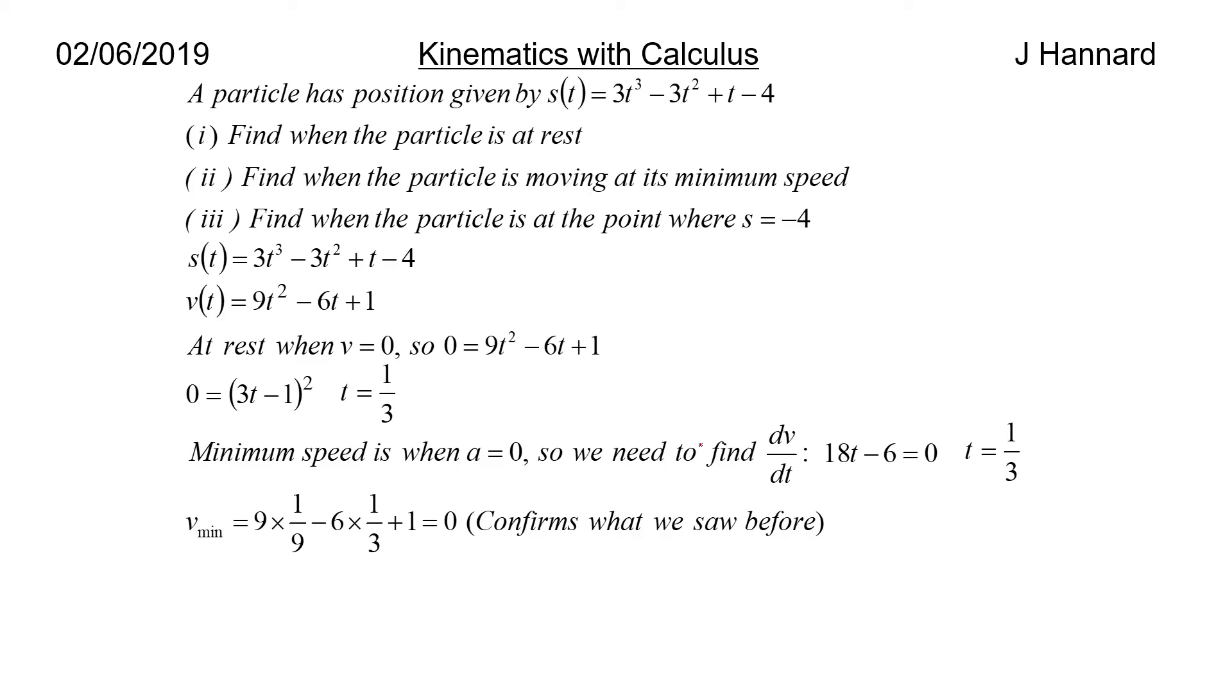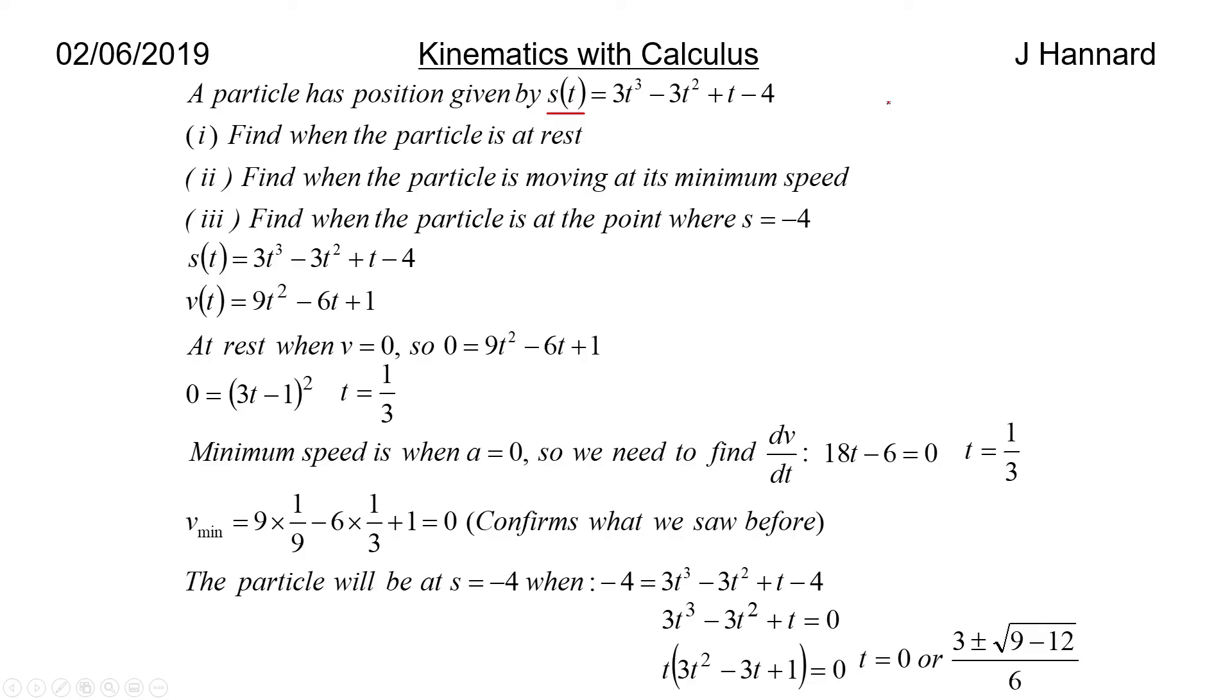Part 3 then. Find when the particle is at the point where s = -4. So we stick -4 at the start of the s(t) equation up here. So they're telling us what that is. So that's -4. And then we set it equal to this. Rearrange it a little bit and we get this cubic. Take a t out and you get a quadratic. So I don't think that factorizes. So you will have to use the quadratic equation. So you get t = 0 or (3 ± √(9 - 12))/6.